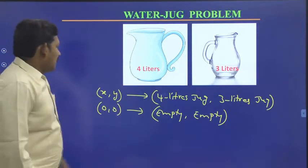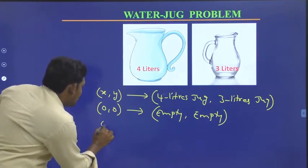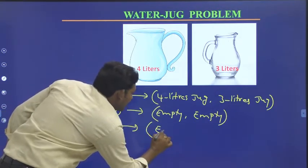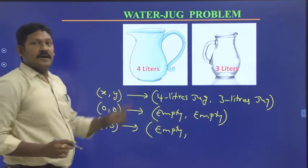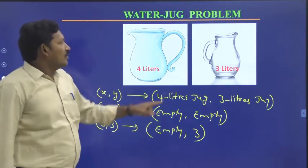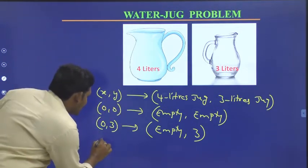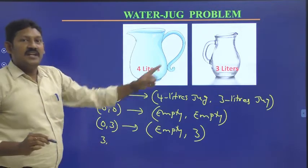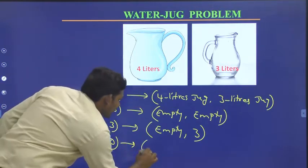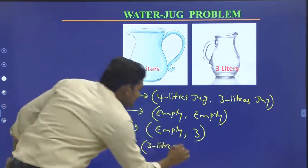Now fill the three liter jug. So the four liter jug is at zero and the three liter jug is at three — the three liter jug is completely filled with water. Now pour these three liters into the four liter jug. Now the four liter jug consists of three liters, whereas the three liter jug is empty.